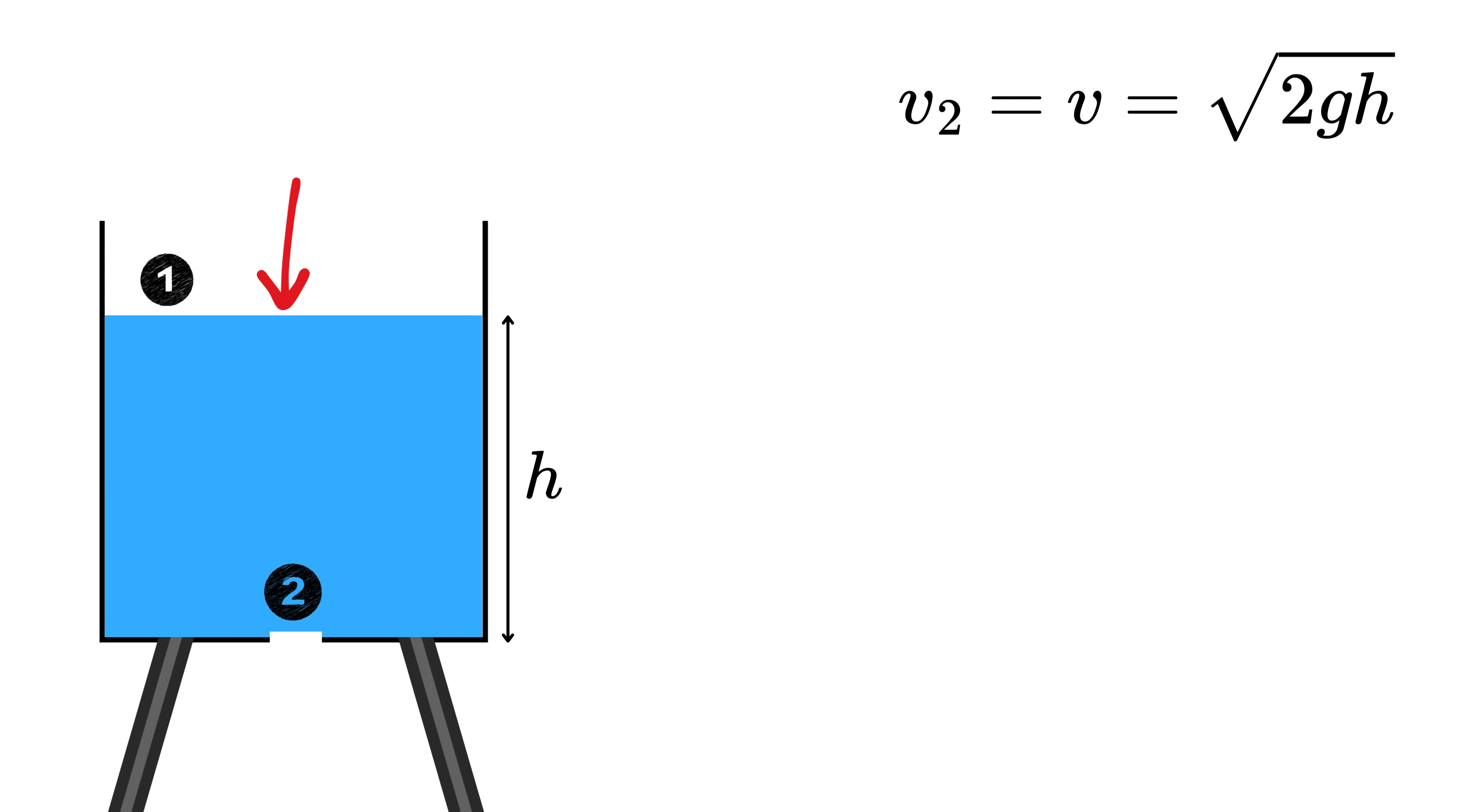Let the area of the top of the tank be capital A. Now there's a tiny hole at the bottom. That hole also has a size, which we'll call small a. The water shoots out of that hole with some speed V, which we already found is square root of 2 times G times H. Now think of this: in a very small time interval dt, how much water comes out?